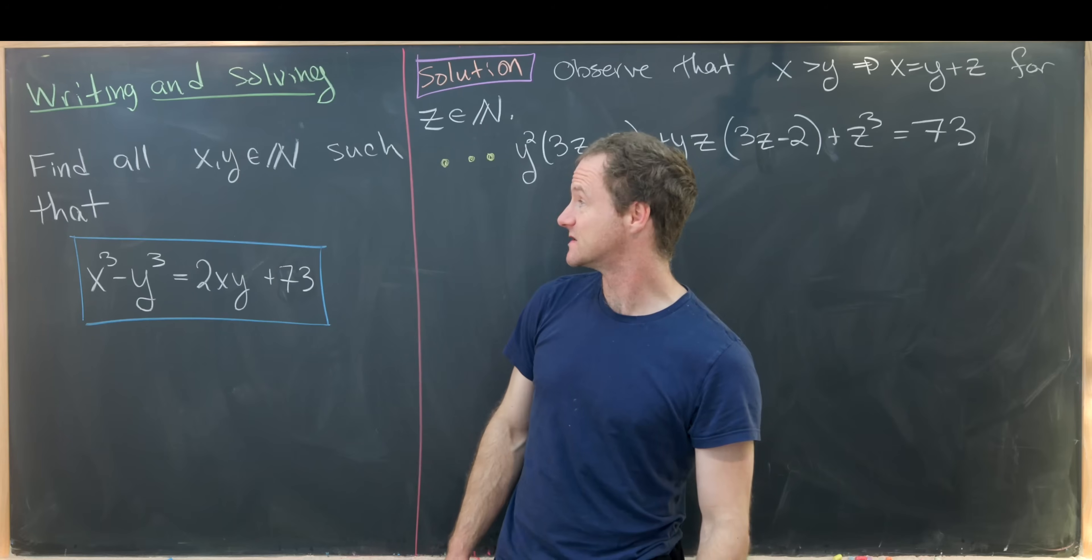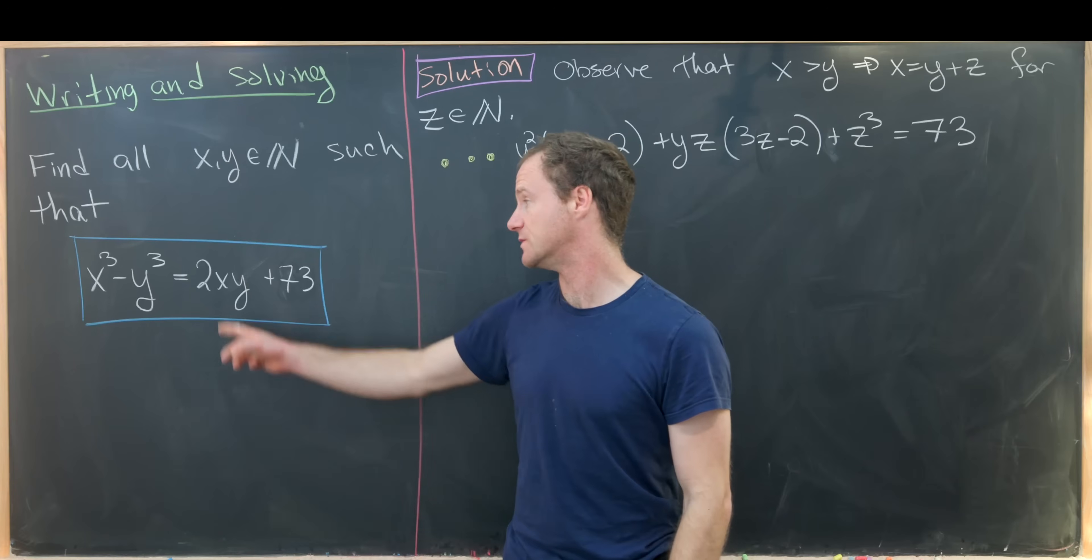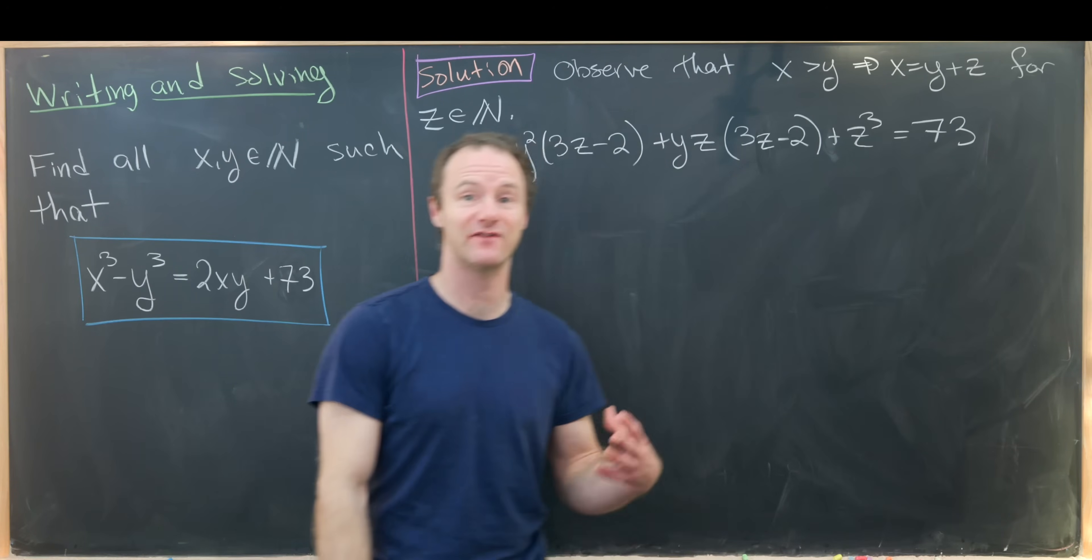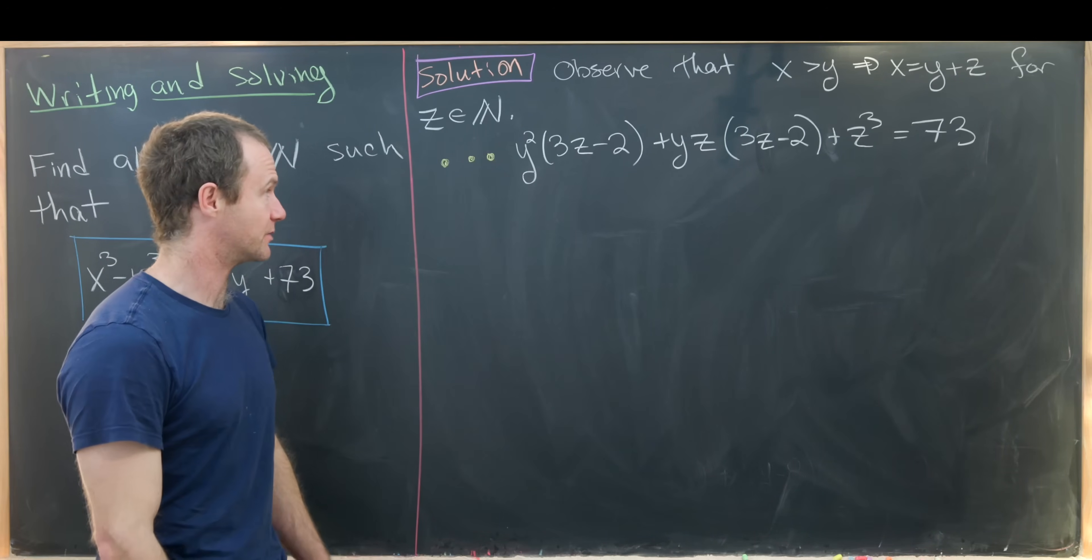Now we're ready to finally look at a careful solution to this problem that we've written. So that is, we're going to find all natural numbers x and y such that x³ - y³ = 2xy + 73.